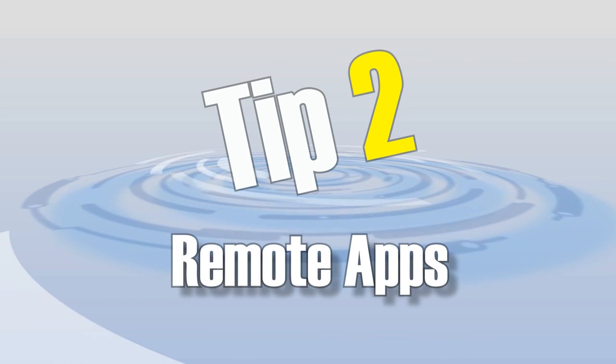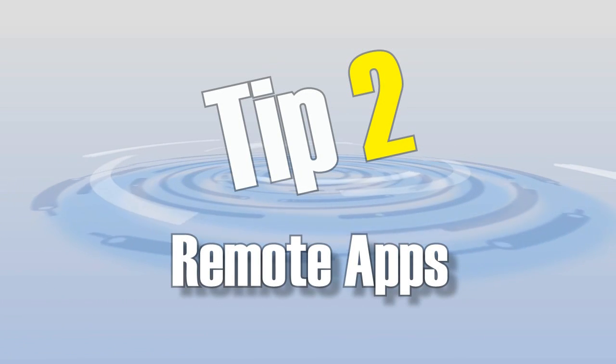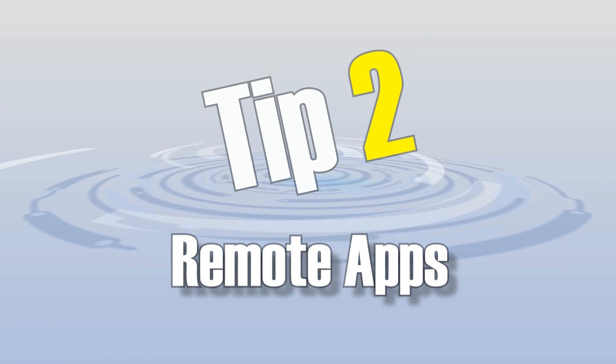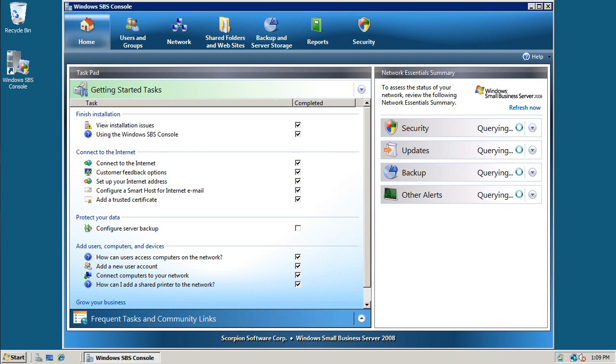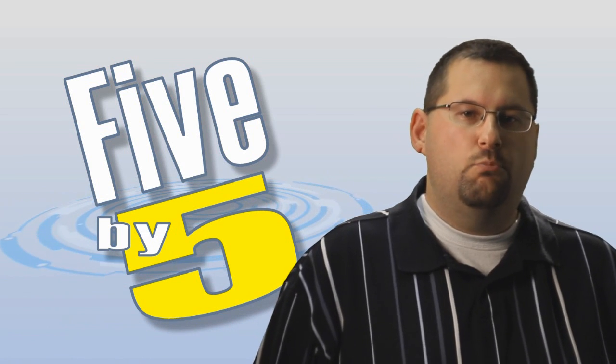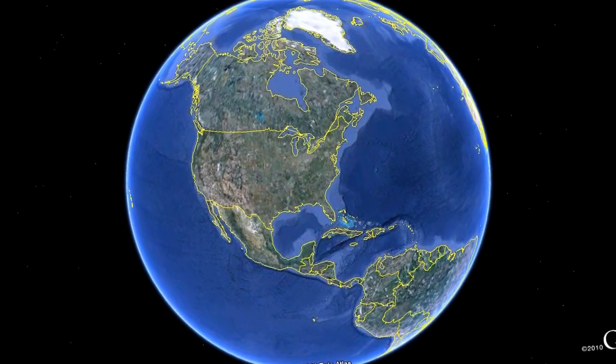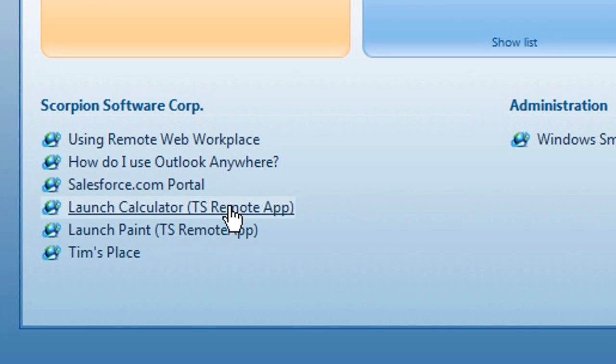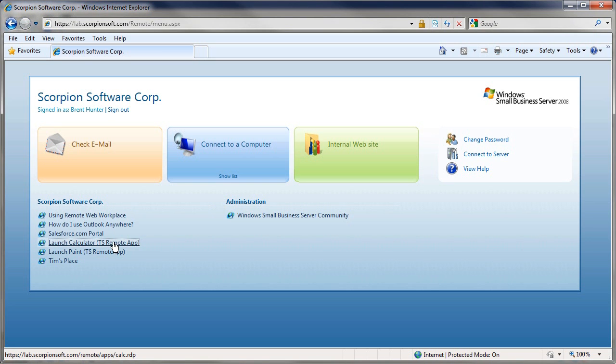Tip 2, Remote Apps. Give your users access to your office apps remotely. If you're using Small Business Server 2008 and also have a Windows Server 2008 terminal server in the office, you have the ability to publish applications over the internet. Through Microsoft's TS Remote Apps, you can run the programs you use at the office from virtually anywhere. You can even link these directly in Remote Web Workplace so your staff can access this all through the simplicity of their web browser.